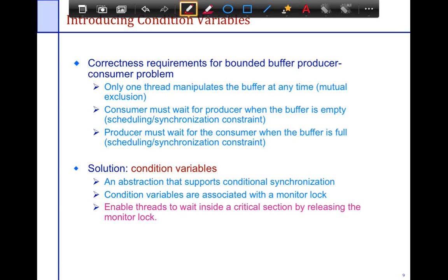So let's go back to our definition of a problem and then we will try to solve this problem using conditional variables. But now I think hopefully it's clear as to why we need conditional variables. So let's look at the correctness requirements. Only one thread should manipulate the buffer at any time. Only one thread gets to touch the buffer. So we want the mutual exclusion constraint.